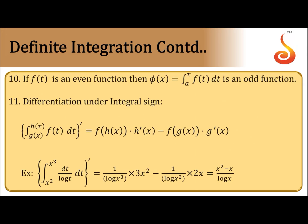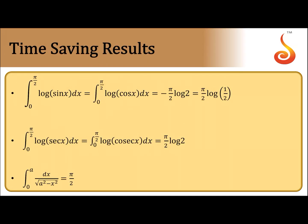Next, differentiation under the integral sign — this is called Leibnitz's theorem. The derivative d/dx of ∫_(g(x))^(h(x)) f(t) dt equals the value of the function at the upper limit multiplied by the derivative of the upper limit, minus the value of the function at the lower limit multiplied by the derivative of the lower limit: f(h(x))·h′(x) − f(g(x))·g′(x).